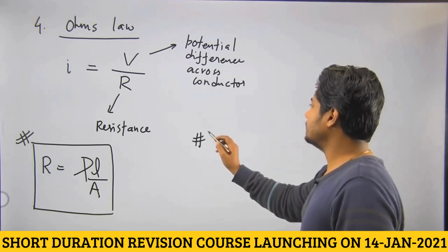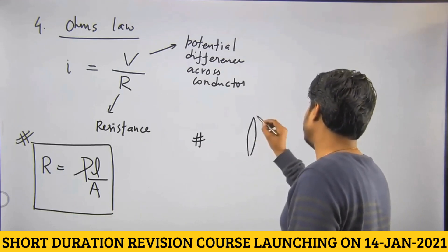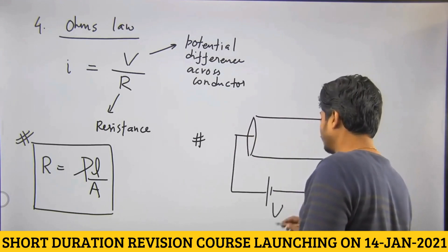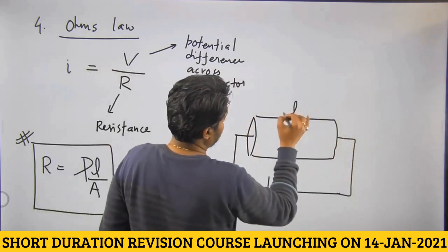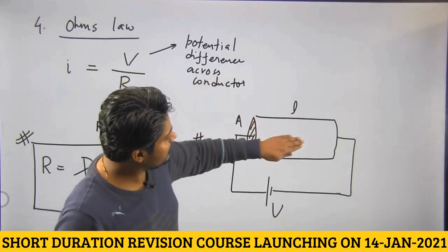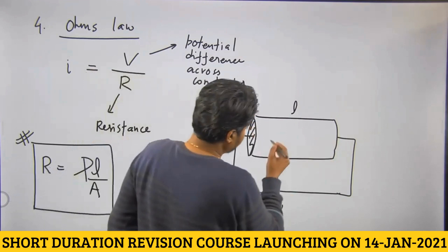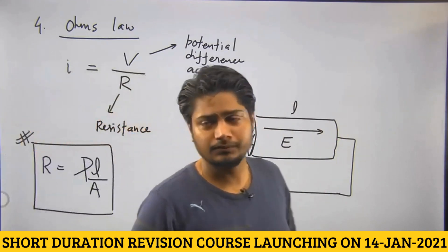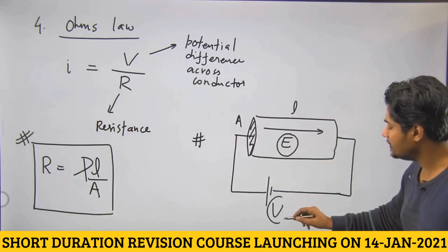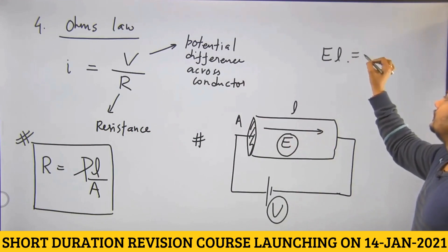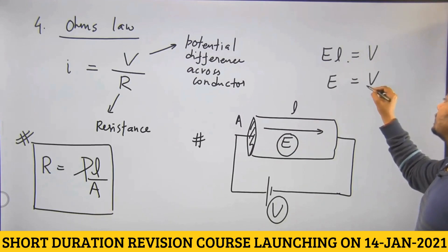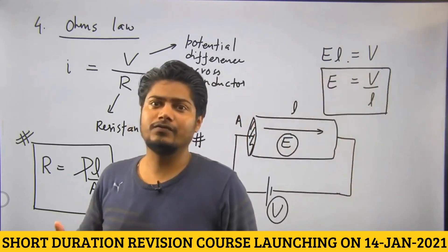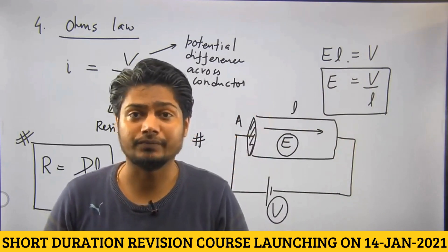The second thing we need to understand is potential difference. Assume this is a conductor, and if you connect it through a battery of voltage V — it is a battery of voltage V and a conductor of length L with cross-sectional area A — the current will be established in the conductor. There will be an internal electric field causing the flow of electrons, and we can write this electric field in terms of potential as E into L equals V. So electric field can be rewritten as V by L. Sometimes it becomes easy to determine the value of electric field — for example, what happens to the electric field if we change the area.